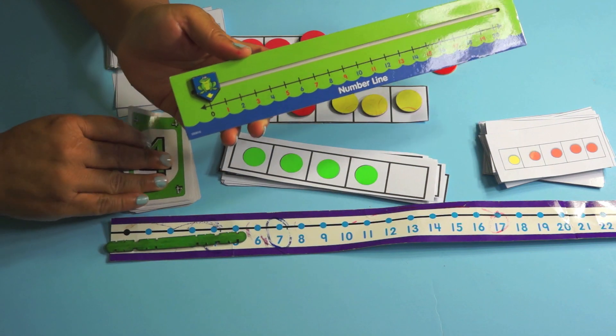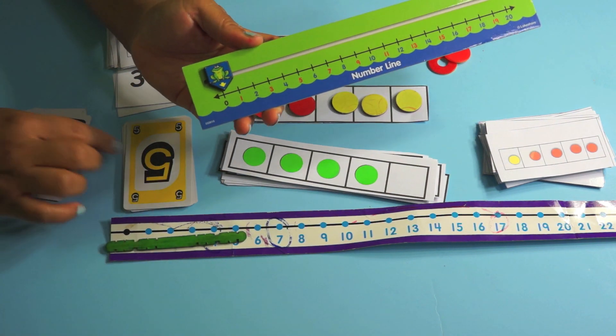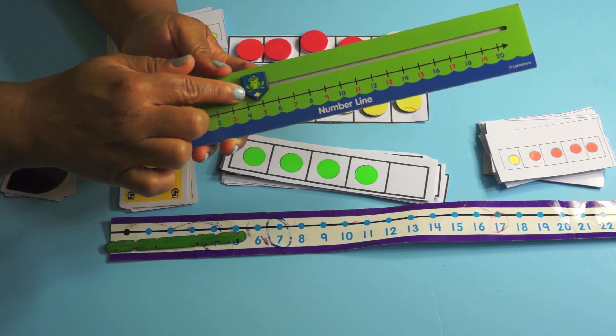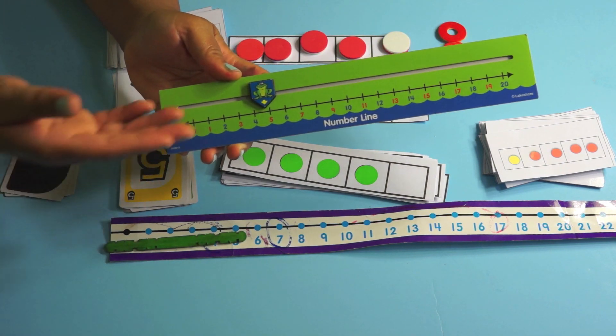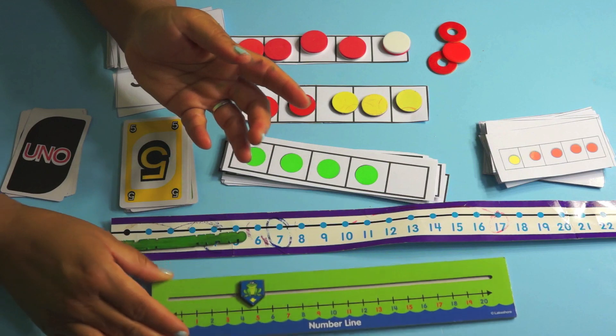And it's the same thing. You have the kids pull an uno card. Oh, I pulled five. How many more do I need to get to five? Oh, you don't need anything to get to five. Five plus zero is five. So you know, you might have this.